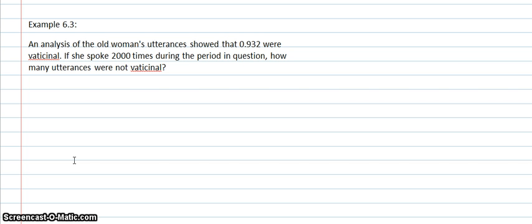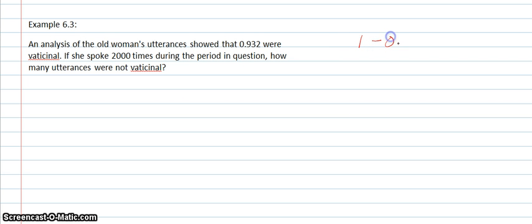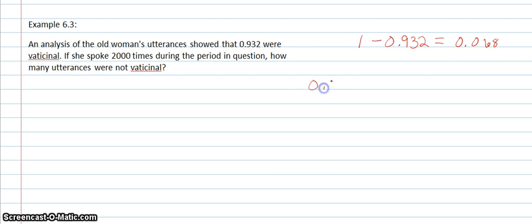That's not a word we normally use. So 0.932 were vaticinal, and we're actually looking for how many were not vaticinal. We need to subtract 0.932 from 1, which gives us 0.068. And then this number is what we're going to multiply by the 2,000 to find out how many were not vaticinal.